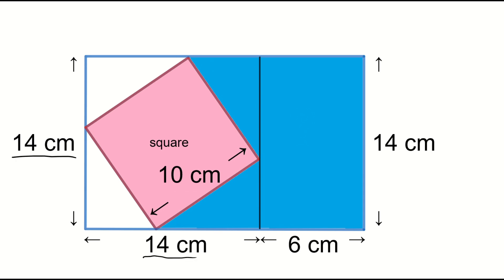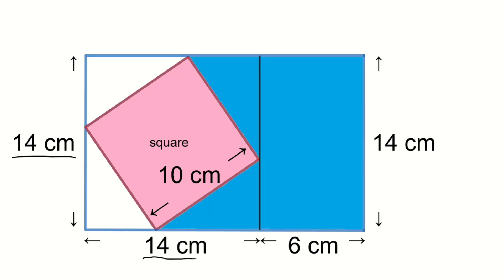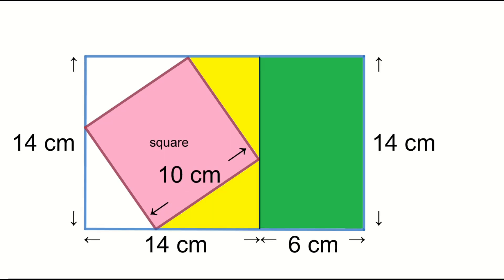Next, to make things easier, let's color the shapes. Paint this right rectangle green, and paint the remained region yellow.